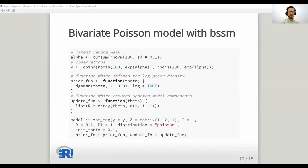Here is an example of a simple bivariate Poisson model where we assume that both time series are generated by the same latent state process alpha. So I'm first simulating some data, and then I define two R functions which are used within the ssm_mng function which defines the whole model. These two R functions, prior_fun and update_fun, define the log prior density and how the model components depend on the parameters theta. These functions together with the definition of the model components such as Z and T are then given to the ssm_mng function which returns the model object.